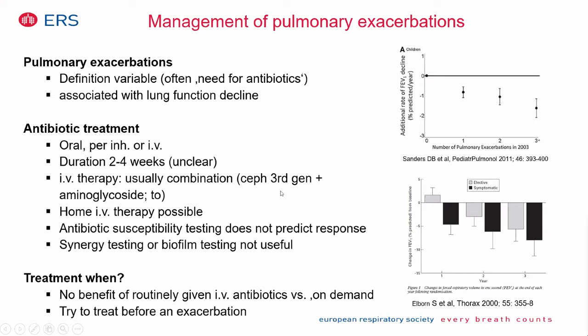A third-generation cephalosporin combined with an aminoglycoside is recommended. Tobramycin is preferred over gentamicin because it is less toxic. Home IV therapies are possible but have the drawback that physiotherapy is not supervised. In vitro resistance found in the lab may not reflect in vivo results, likely because the lungs are colonized by different strains of the same bacterium, some of which remain sensitive.